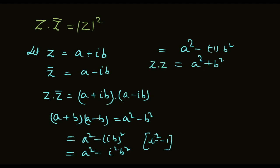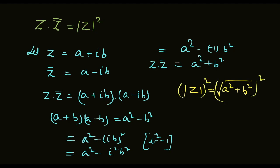It means z into z conjugate equal to a square plus b square. Modulus of z हमारा आता है a square plus b square का root. इसको दोनों sides में square करेंगे तो modulus of z का square आजाएगा a square plus b square.